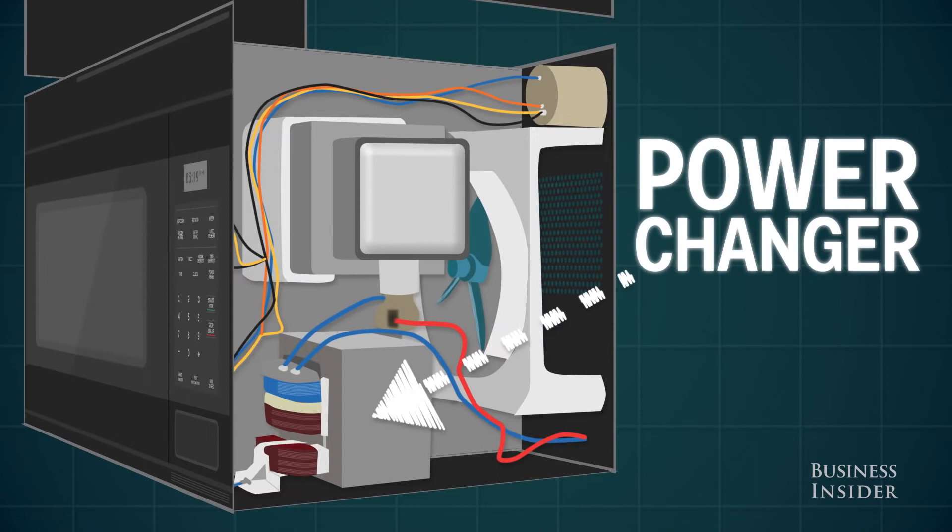It starts with the power changer, which turns the power from the wall into a kind of power that's better for making radio waves.